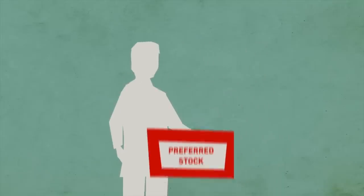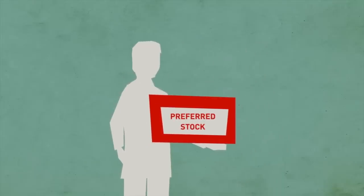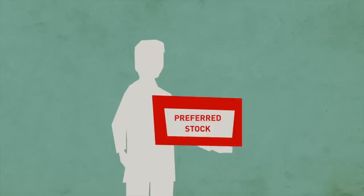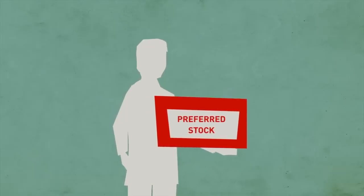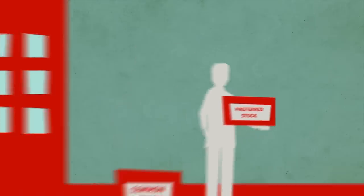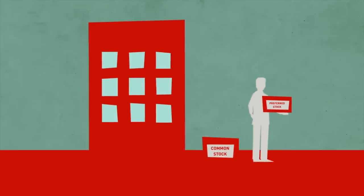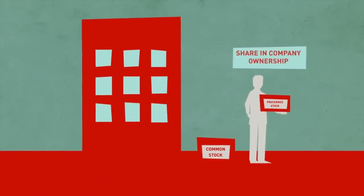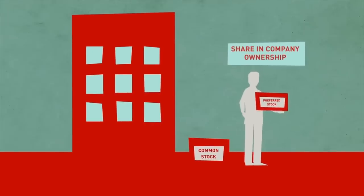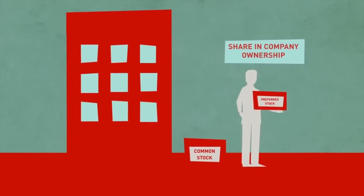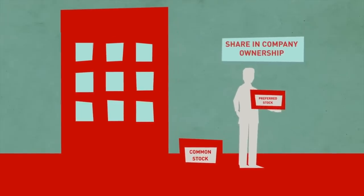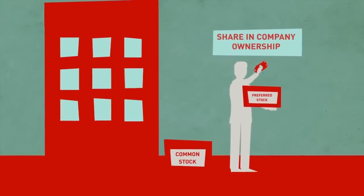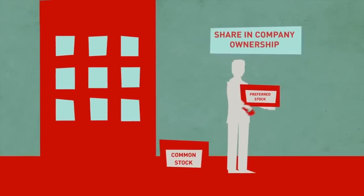Preferred stocks differ from common stocks in that they have characteristics of debt securities as well as equity securities. Preferred stock, like common stock, denotes a share in a company's ownership. However, it does not share the same propensity for growth as common stock and typically does not come with voting rights.